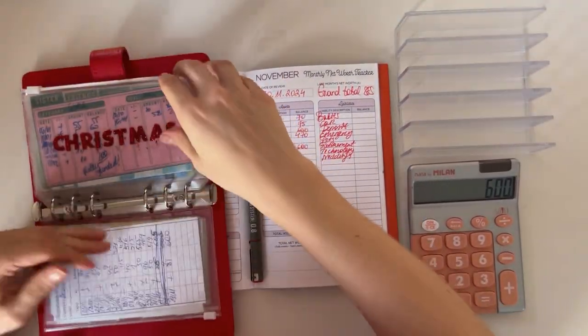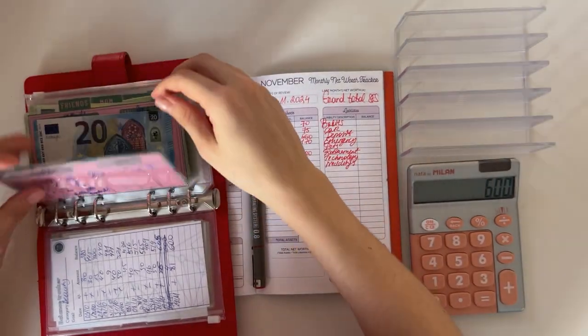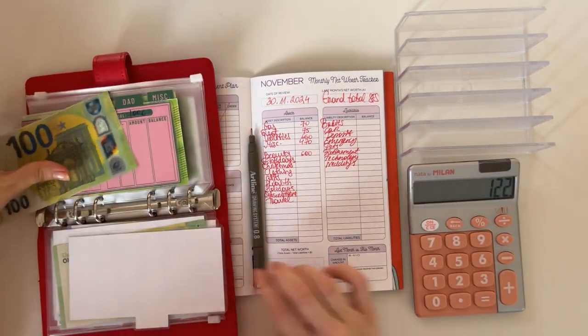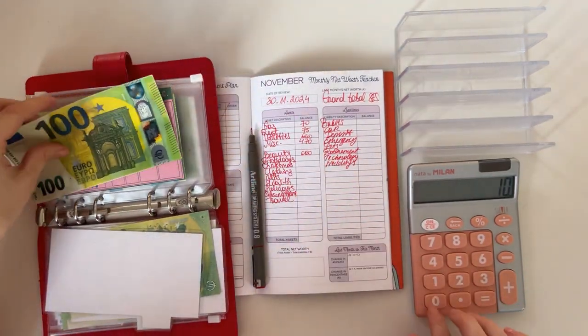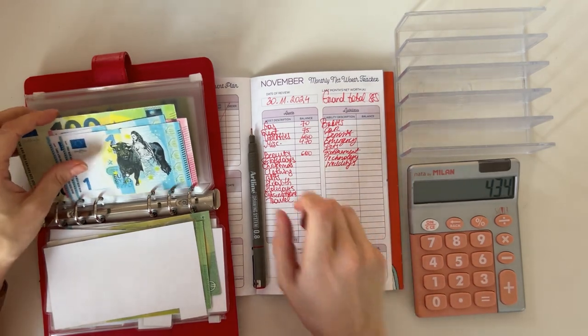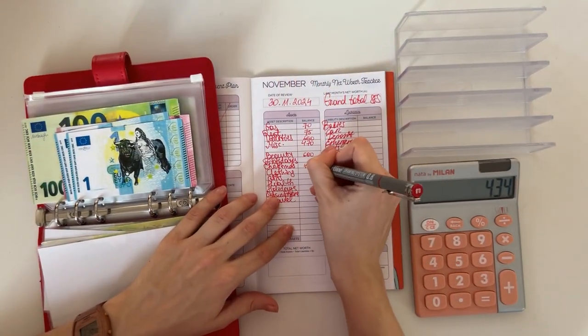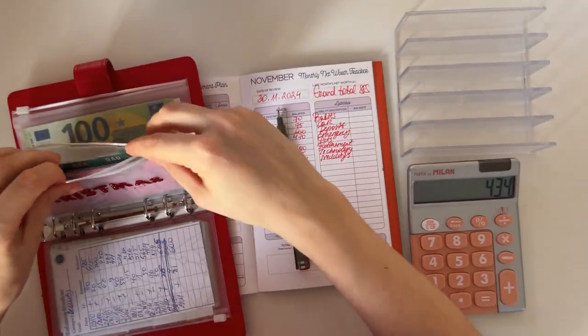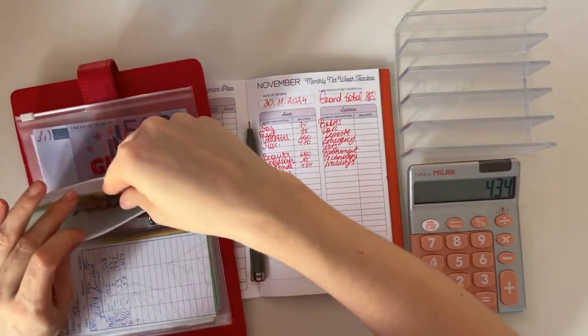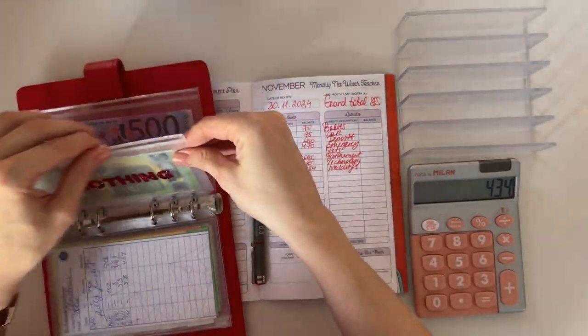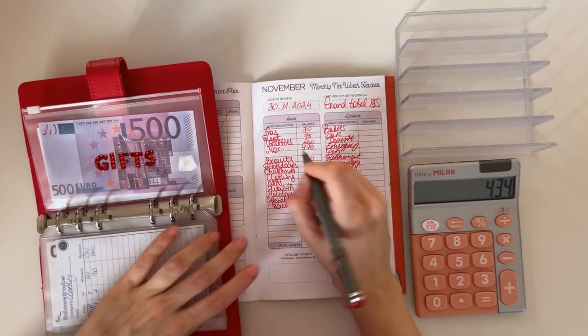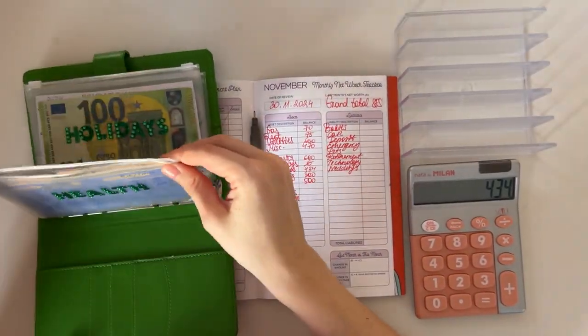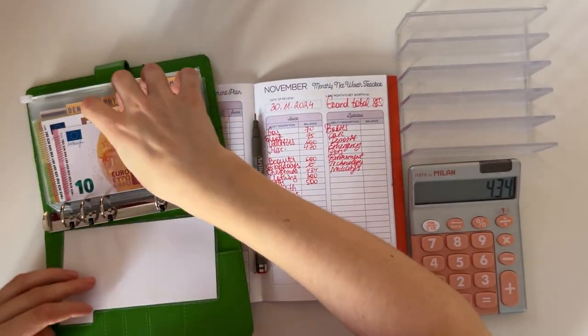Christmas: sister has 22, friends have 100, mom has 100, dad has 100, and miscellaneous has 112. So that's 434 in total. Next up we have clothing, and clothing has 300. And gifts has 500. That's two binders down.